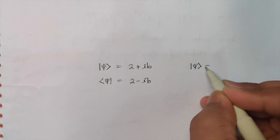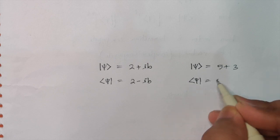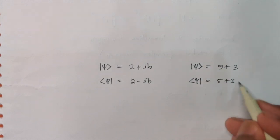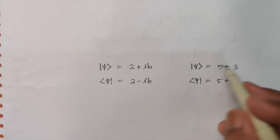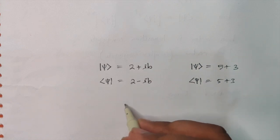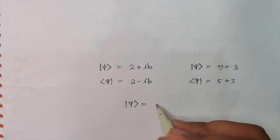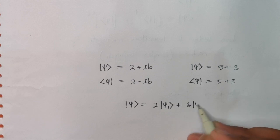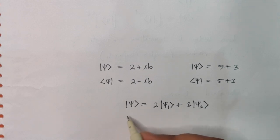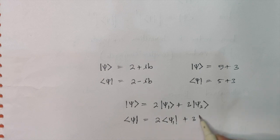And let's say if I have a ket vector like 5 plus 3 — if it is so, then its bra vector will also be 5 plus 3 only. Nothing will change in it because you don't have any imaginary part, no complex part in that. So it will remain as it is. Now let's say a particular wave function is a sum of two wave functions. That can be expressed in terms of ket vectors. So a wave function like 2 Psi-1 plus 3 Psi-2 — if you want to form the bra vector of that, the constants remain and all corresponding ket vectors get converted into corresponding bra vectors.